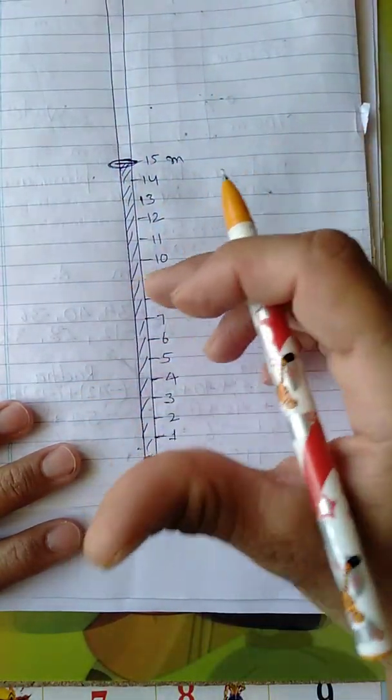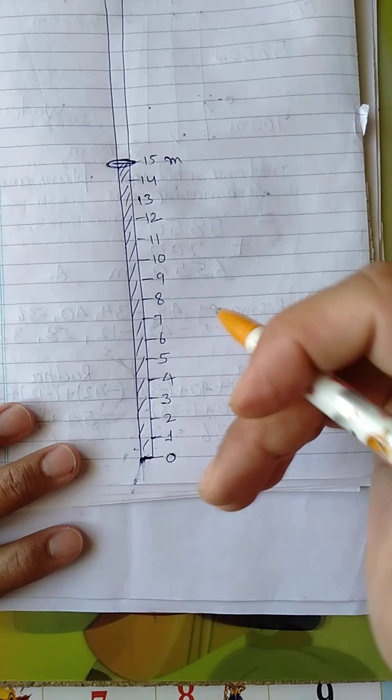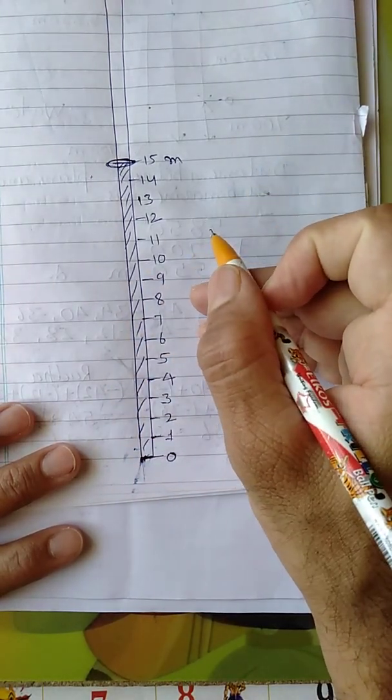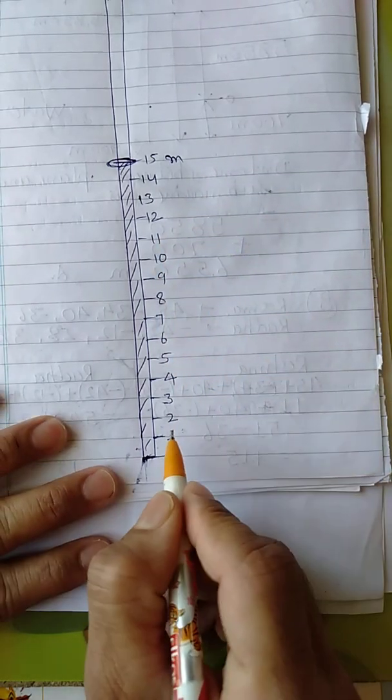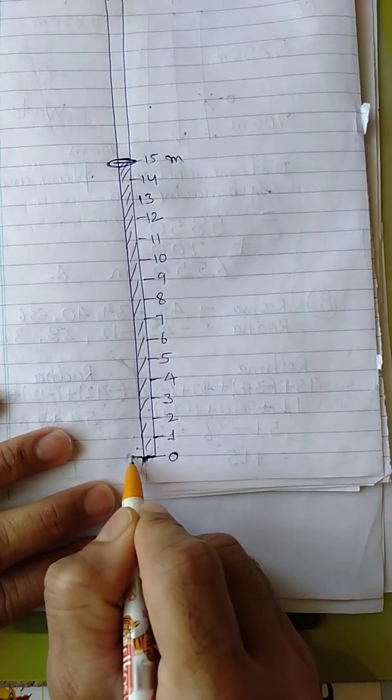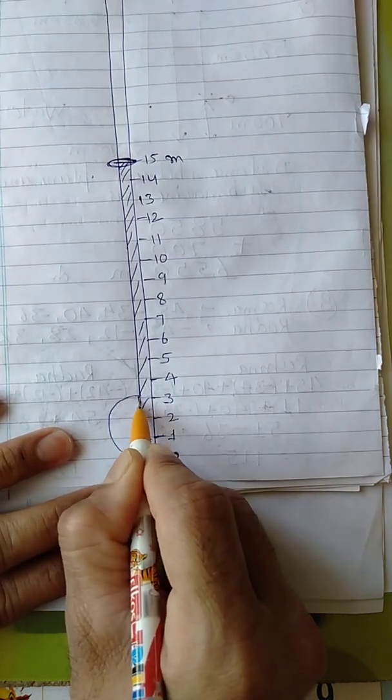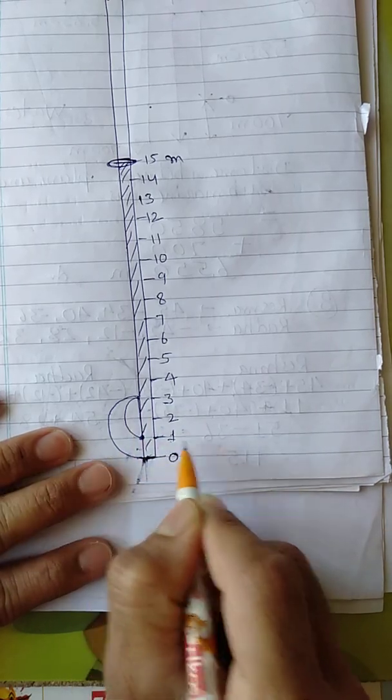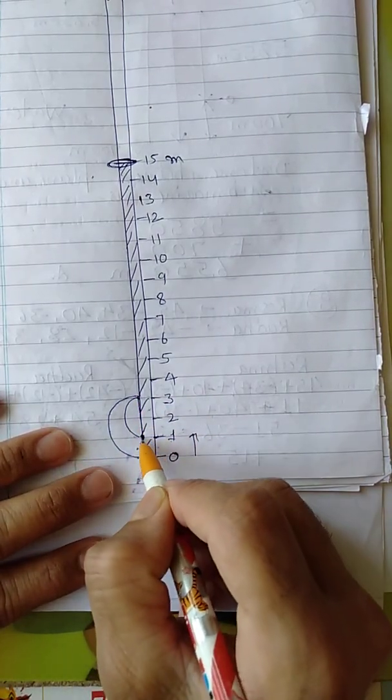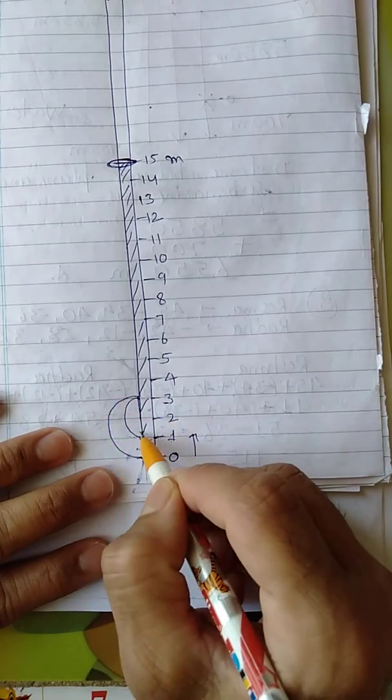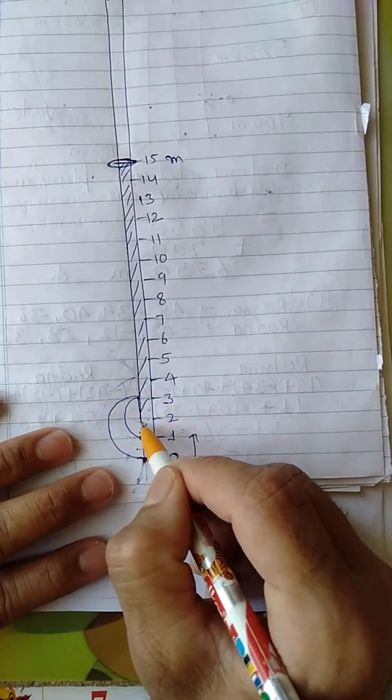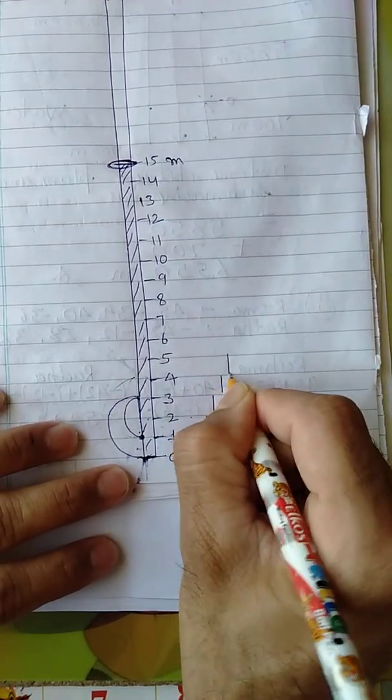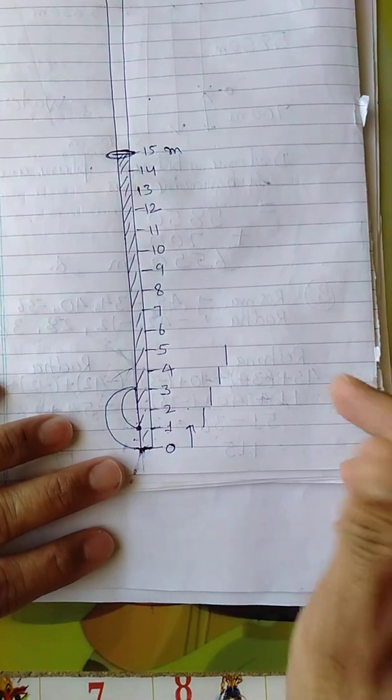Question is, a monkey is trying to climb up the pole measuring 15 meters which is greased. Greased means it is slippery. If we try to climb on this one, we will slip. He tries to climb 3 meters and slip down 2 meters. Means monkey is trying 3 meters. One time he is going 3 meters and coming back 2 meters. So he is at 1 now. Again from here he is trying 3 meters: 1, 2, and 3, going to 4 and coming back to 2. Means every time he is clearing 1 meter every time.